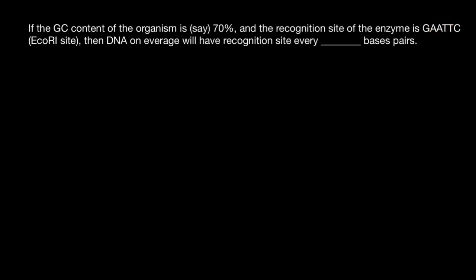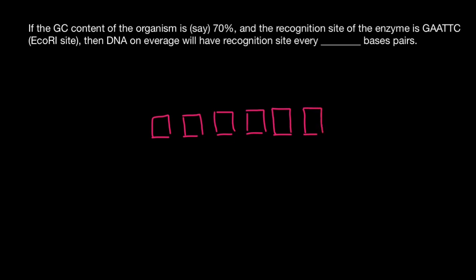Imagine that each box here represents one base — so one, two, three, four, five, and six. We can also show here the double-stranded DNA going on both sides.